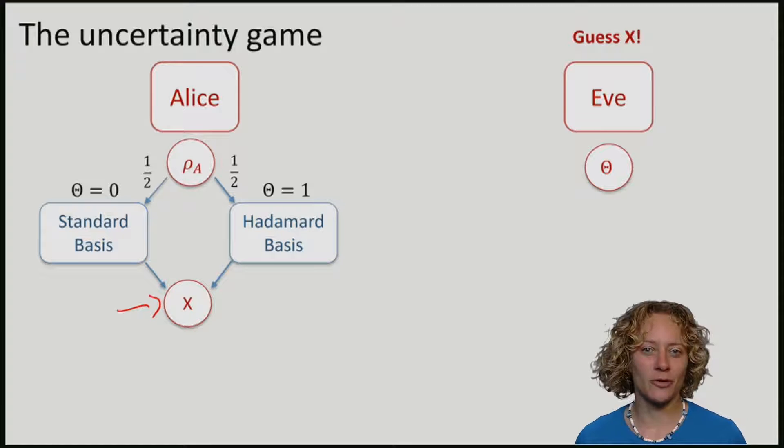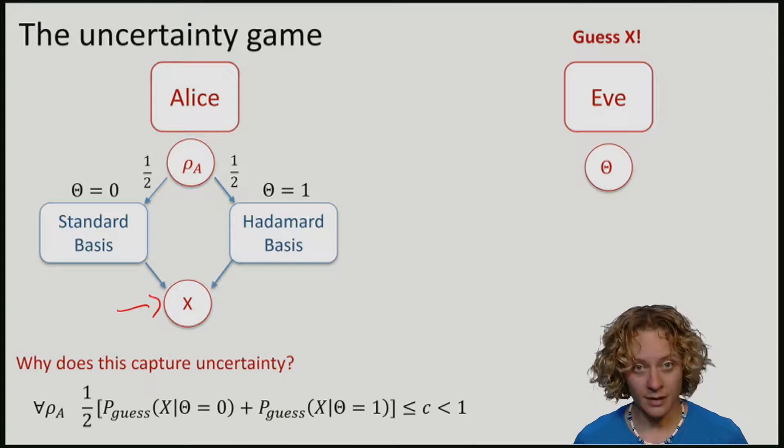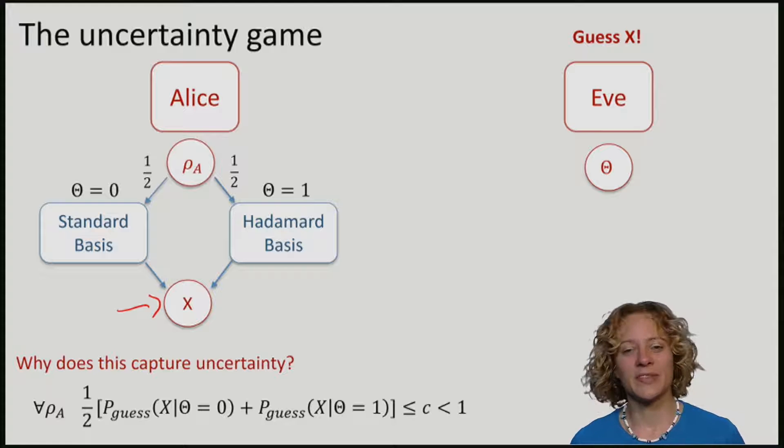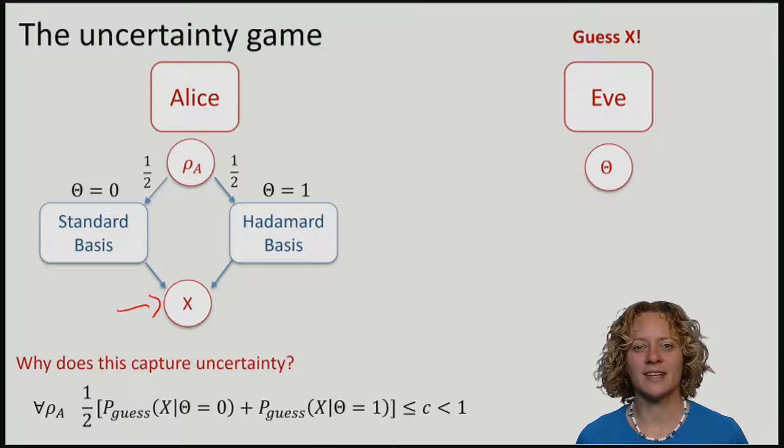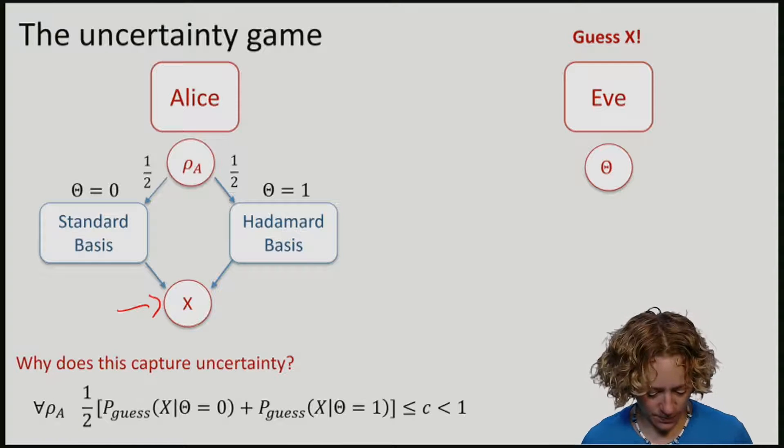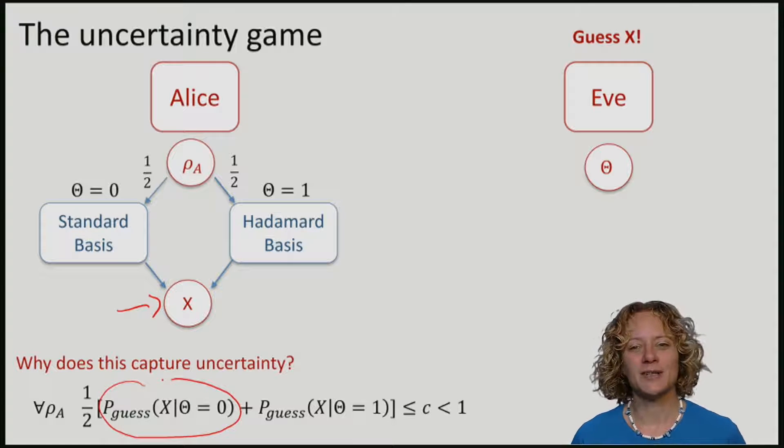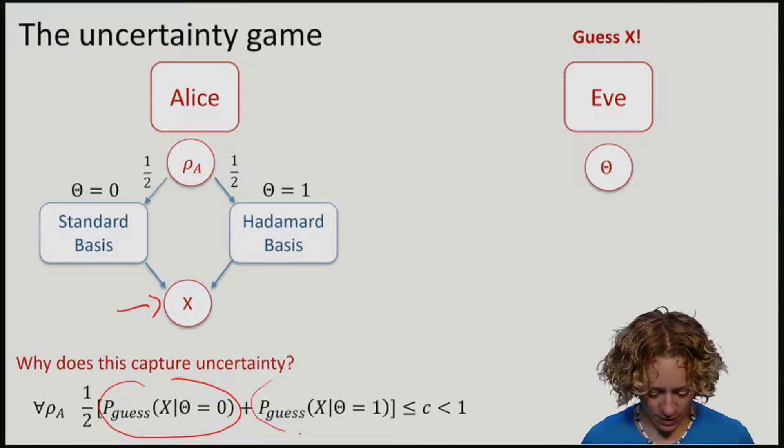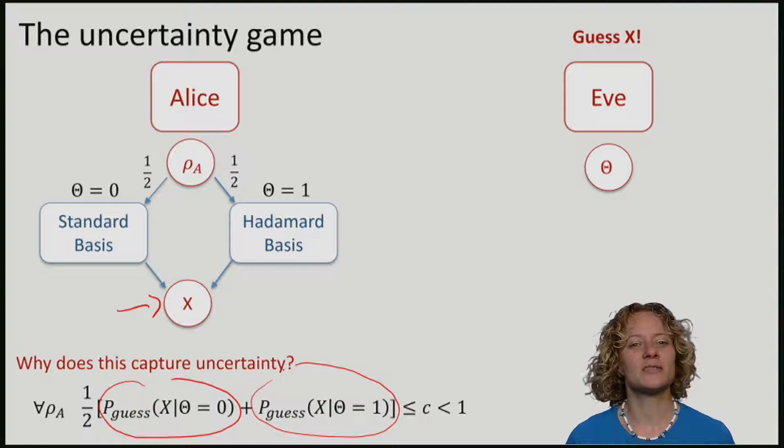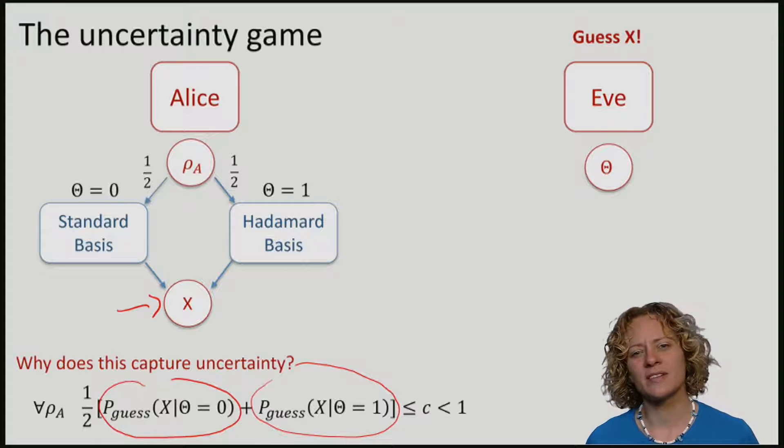To see why this captures uncertainty, let's have a look at the following expression. If it was true that for all states rho a that Eve can prepare, the average of the probability of guessing the outcome if theta was zero and the probability of guessing the outcome if theta was one, if that is strictly less than one, then this means that there is some amount of uncertainty.